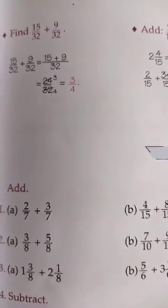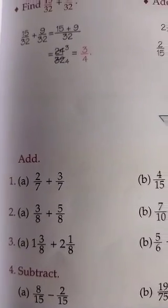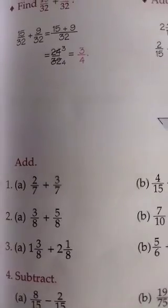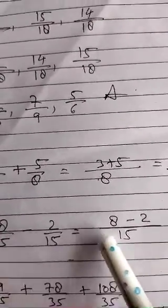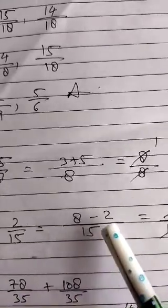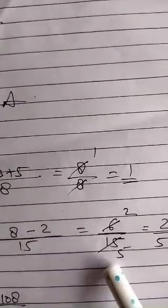Question number 4: 8 upon 15 minus 2 upon 15. The denominator is the same, so there is no need to find the LCM. Write the denominator as it is and subtract the numerators: 8 minus 2 gives 6 upon 15. Now 6 upon 15 can be reduced further by the table of 3 — 3 twos are 6 and 3 fives are 15 — so 2 upon 5 is your answer.